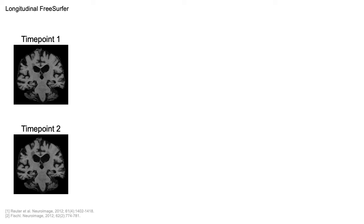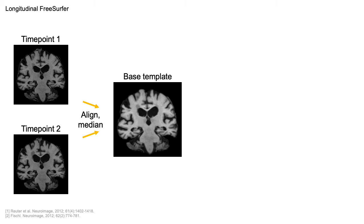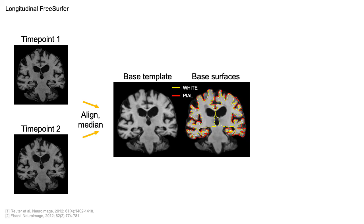Longitudinal FreeSurfer creates a subject-specific template, which we call BASE, by rigidly registering and voxel-wise median filtering the input time points into an unbiased midspace. The BASE template is then processed and information is extracted, such as the pial and white surfaces.